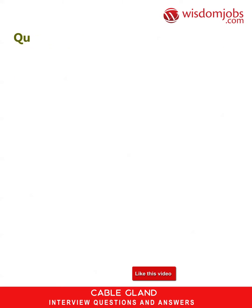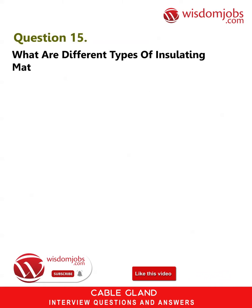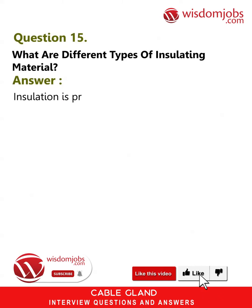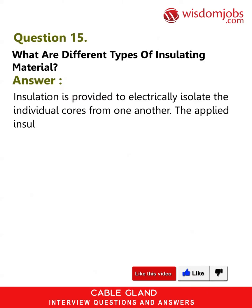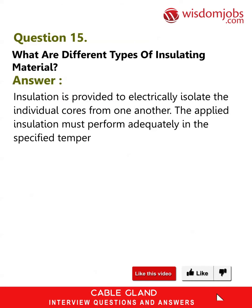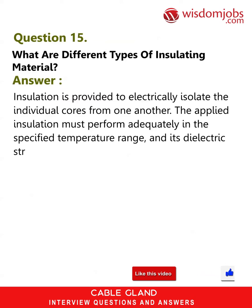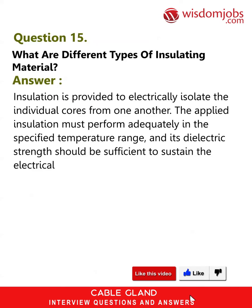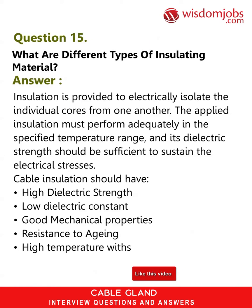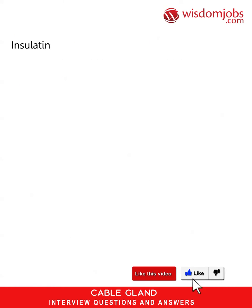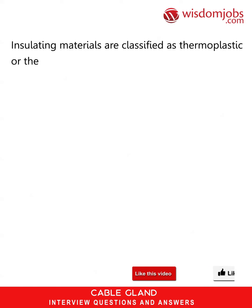Question 15: What are the different types of insulating material? Insulation is provided to electrically isolate the individual cores from one another. The applied insulation must perform adequately in the specified temperature range and its dielectric strength should be sufficient to sustain the electrical stresses. Cable insulation should have high dielectric strength, low dielectric constant, good mechanical properties, resistance to aging, and high temperature withstandability.